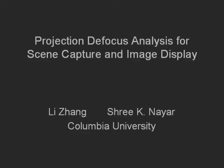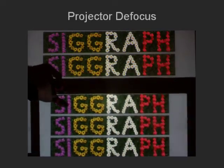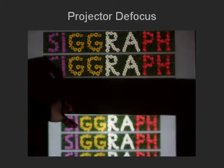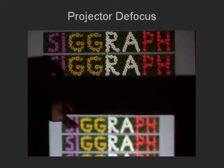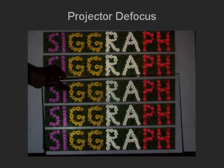Projectors are designed to create bright, focused images on a single fronto-parallel plane. As a result, they have large apertures and narrow depth of fields compared to cameras. In this video, we see the projected image going out of focus as we move the board from the screen toward the projector. In this work, we present novel methods that exploit projector defocus to robustly recover scene geometry, as well as enhance the quality of displayed images.